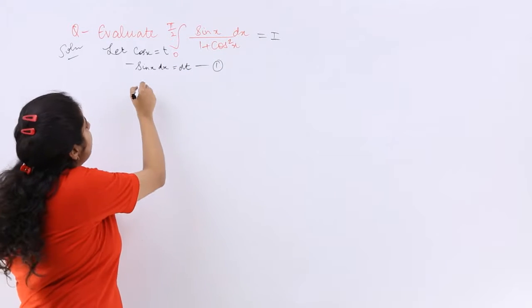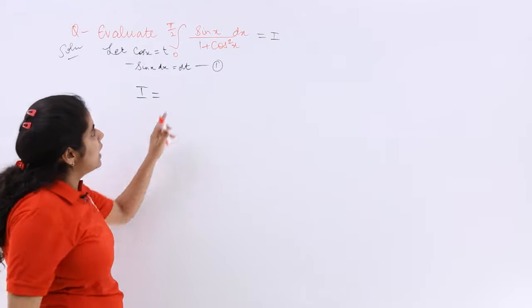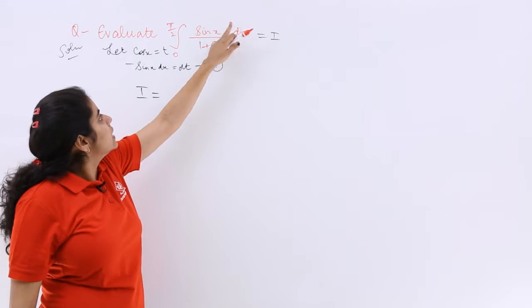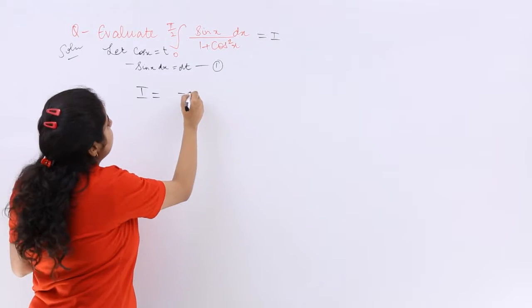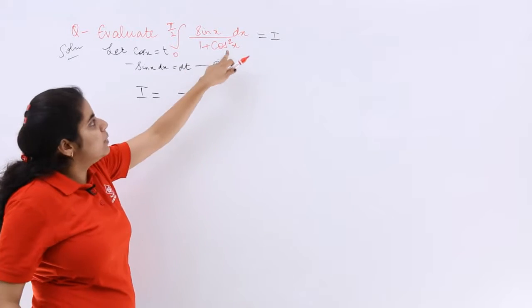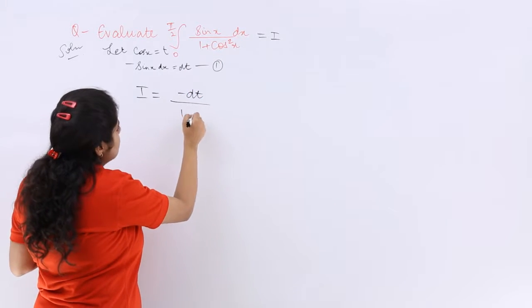I know that now my I would change. My I would become sin x dx as -dt and 1 plus cos² x as 1 plus t².